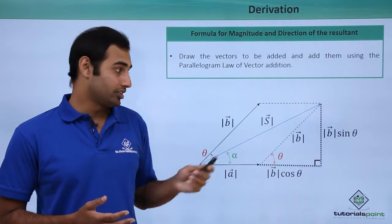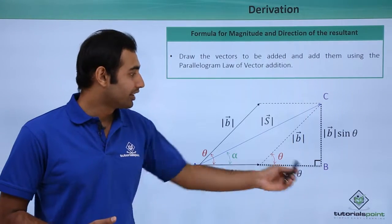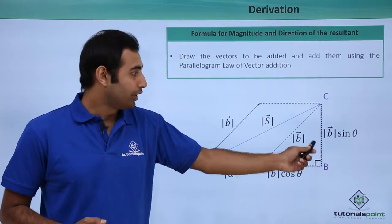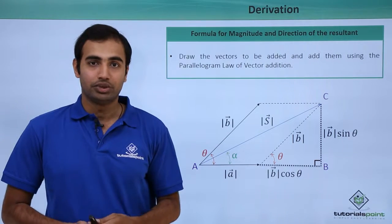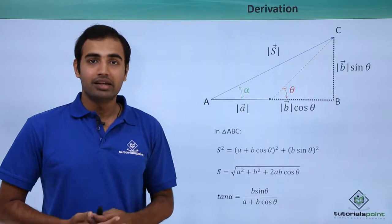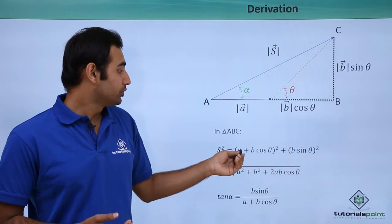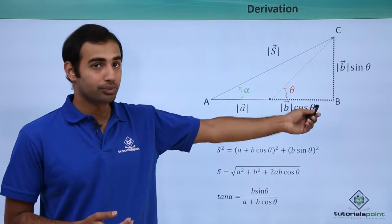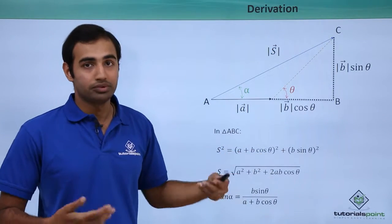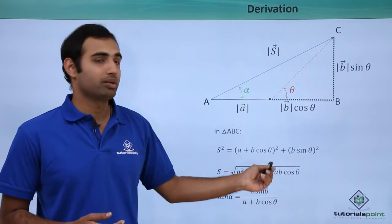To calculate the length of the S vector, the most suitable triangle is triangle ABC. In this triangle I know the length of both legs, and the hypotenuse is the S vector, so I apply the Pythagorean theorem. Considering triangle ABC: S² equals (a + b cos theta)² plus (b sin theta)². Opening the brackets and proceeding with the calculations, the result is S equals the square root of a² + b² + 2ab cos theta.